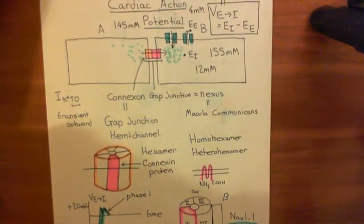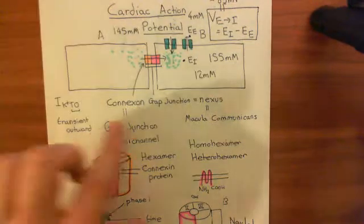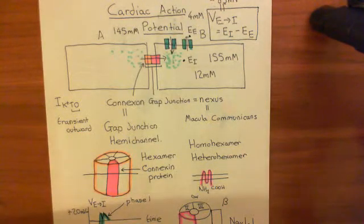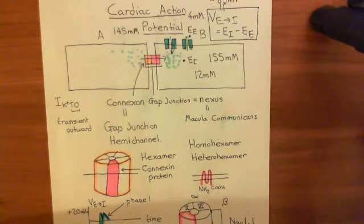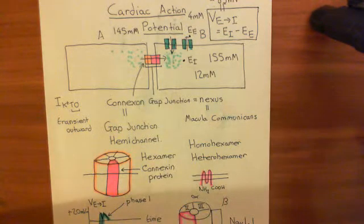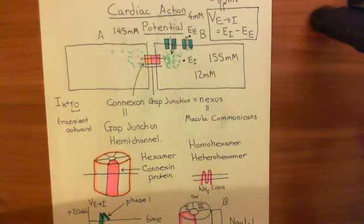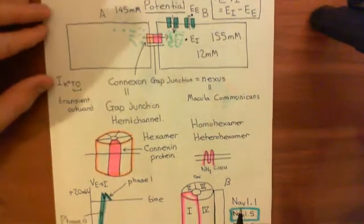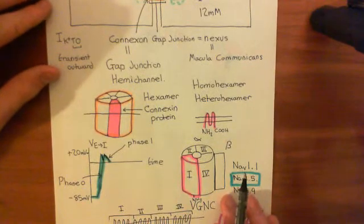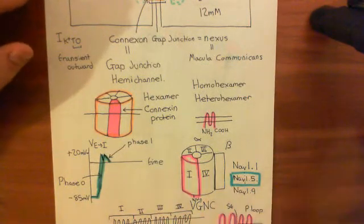So far in our story of the cardiac action potential, we've had the initial depolarization of our cardiomyocyte, which occurs because sodium ions are moving in from the neighboring cardiomyocyte through the gap junctions. That initial depolarization activated our voltage-gated sodium channels, specifically of the NAV1.5 type, allowing sodium to enter and causing the rapid depolarization we call phase 0 of the cardiac action potential.